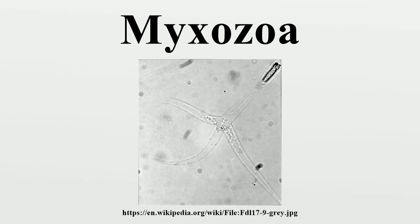Further classification was hindered by conflicting evidence. Although 18S rDNA suggested an affinity with Cnidaria, other rDNA sampled and the Hox genes of two species were more similar to those of the Bilateria. The discovery that Buddenbrockia plumatella, a worm-like parasite up to 2 mm in length, is a mixozoan initially appeared to strengthen the case for a bilaterian origin, as the body plan is superficially similar.